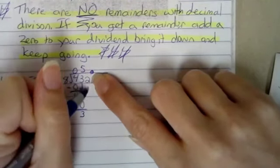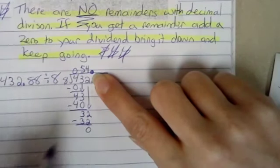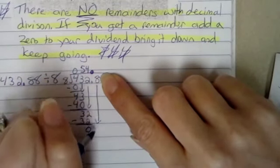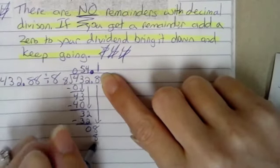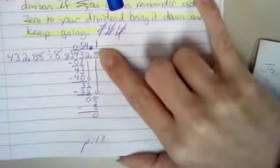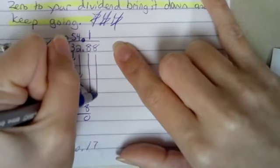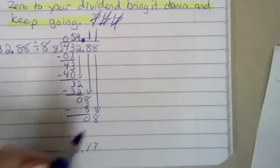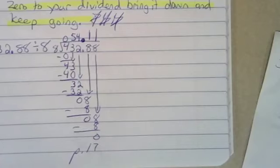8 goes into 32, 4 times, 4 times 8 is 32, we subtract, we get 0. That is less. We bring down our 8, 8 goes into 8, 1 times, 1 times 8 is 8, we subtract and get 0, 0 is less.